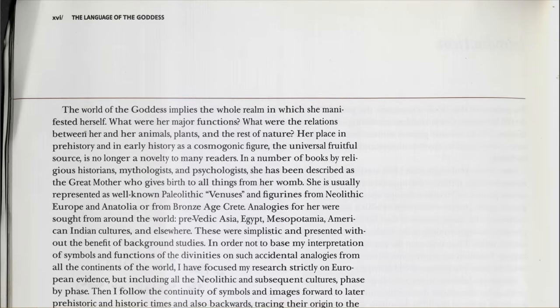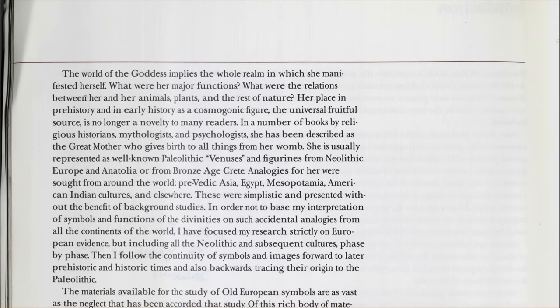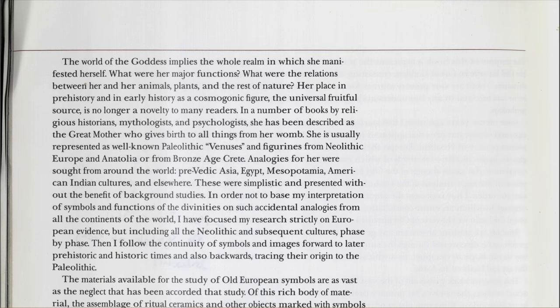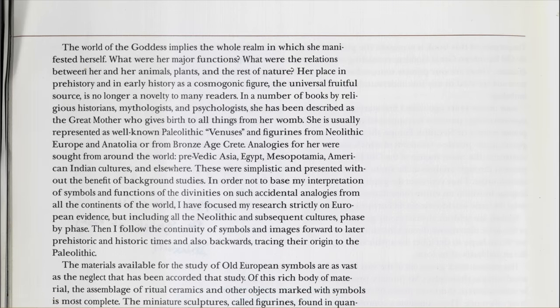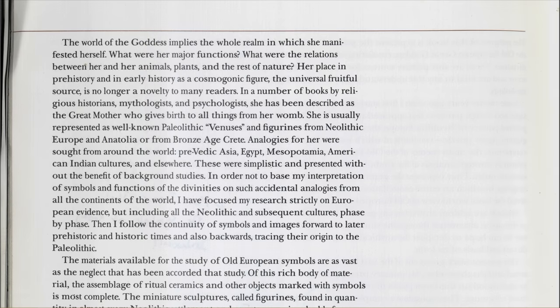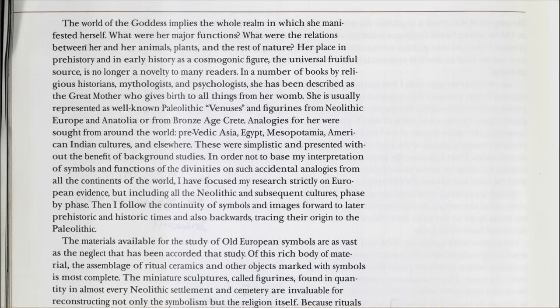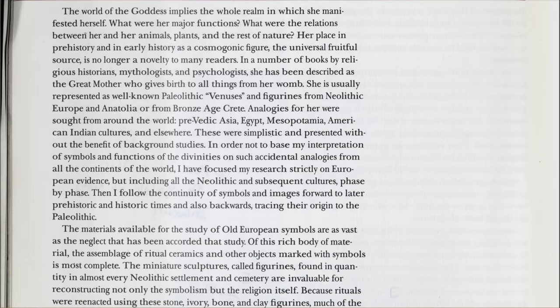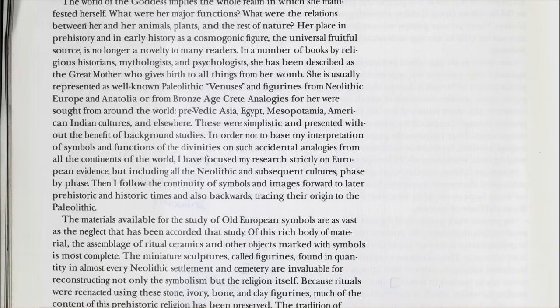The world of the goddess implies the whole realm in which she manifested herself. What were her major functions? What were the relations between her and her animals, plants, and the rest of nature? Her place in prehistory and early history as a cosmogenic figure, the universal fruitful source, is no longer a novelty. In a number of books by religious historians, mythologists, and psychologists, she has been described as the great mother who gives birth to all things from her womb, represented in well-known Paleolithic Venuses and figurines from Neolithic Europe and Anatolia. Analogies were sought from around the world — pre-Vedic Asia, Egypt, Mesopotamia, American Indian cultures — but these were simplistic and presented without the benefit of background studies.